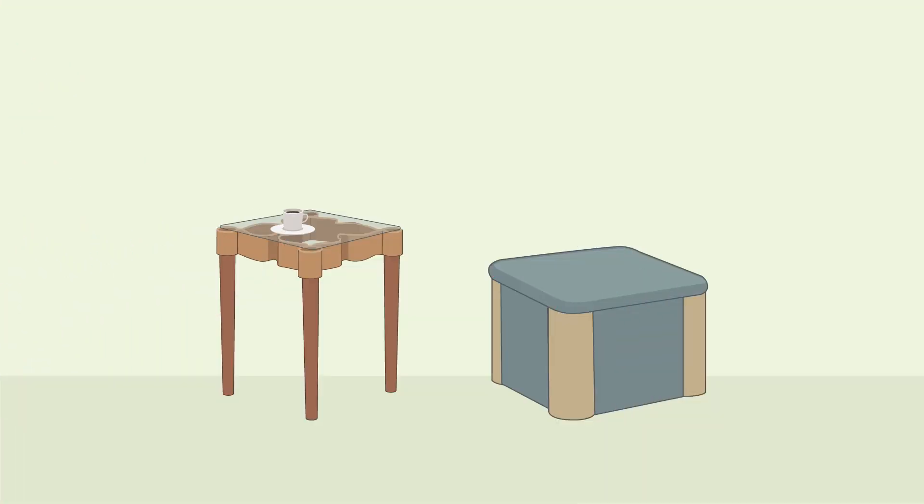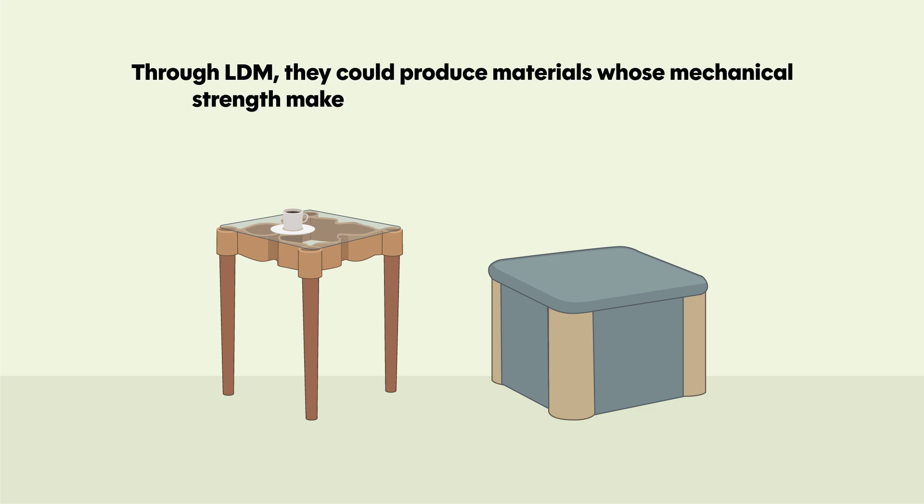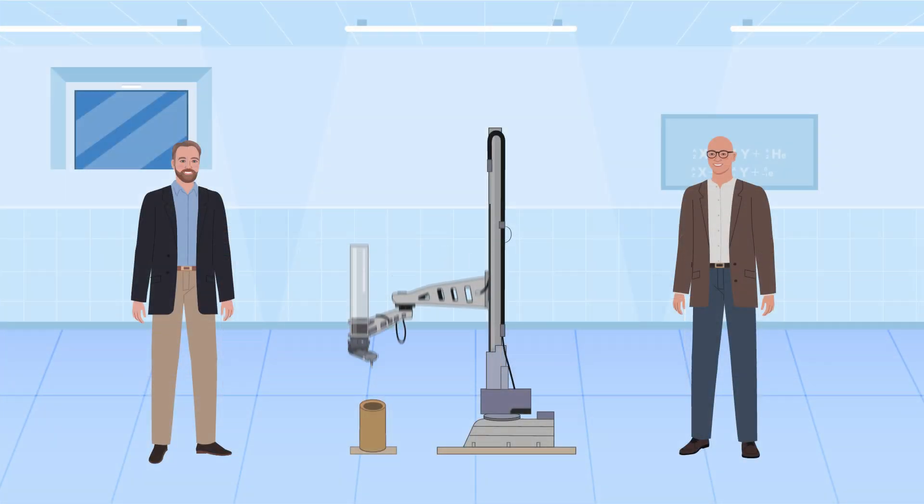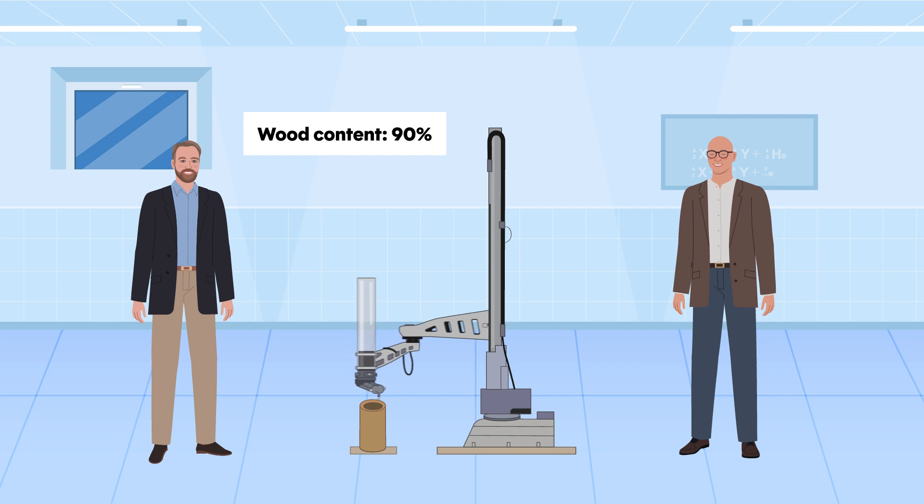Their results were promising. Through LDM, they could produce materials whose mechanical strength makes them well-suited for use in furniture. As well as being more energy-efficient than previous approaches, LDM also enabled them to increase the proportion of wood in the mixture up to 90%, while maintaining both processability and strength.